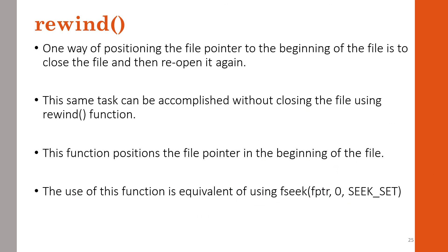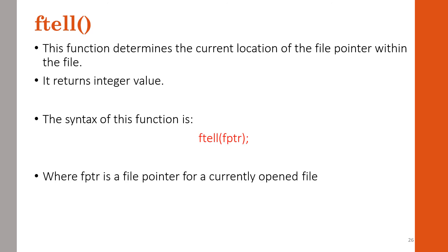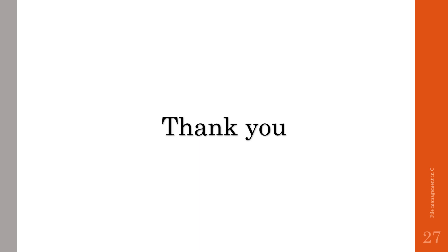The rewind function moves the file pointer back to the beginning of the file. ftell returns the current position of the file pointer. The parameter for ftell is the file pointer. These functions are used for direct and random access file operations in C.